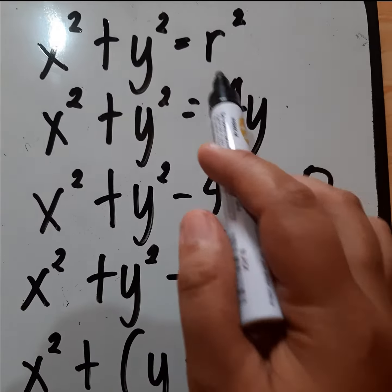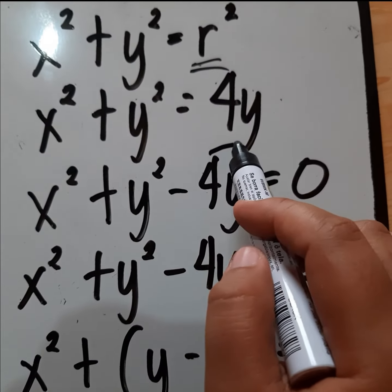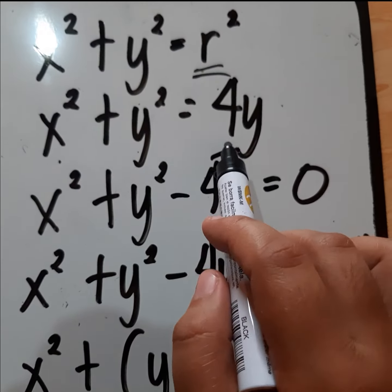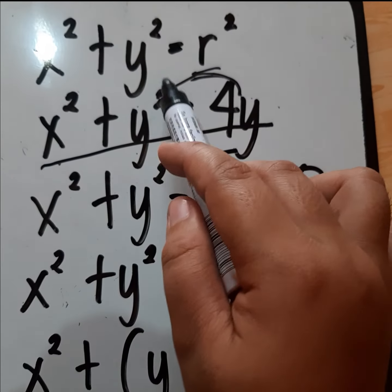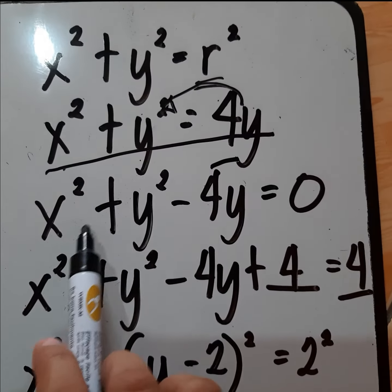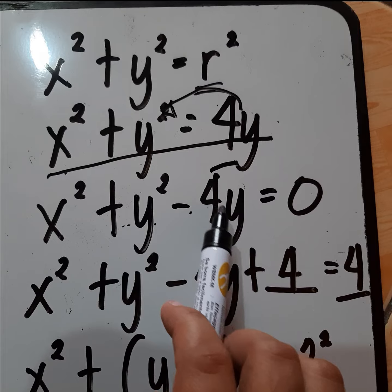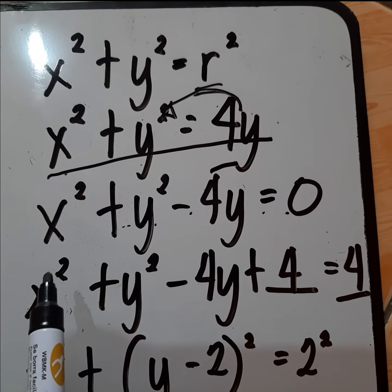Substitute r squared into x squared plus y squared. So our new equation will be x squared plus y squared is equal to 4y. We need to equate this into 0 and transpose 4y to the left. So x squared plus y squared minus 4y is equal to 0.